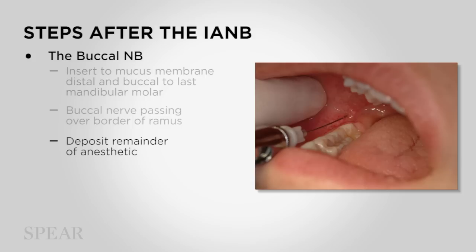Unfortunately, this injection is more painful than the inferior alveolar. The VAS — visual analog scale — rates pain from 0 to 10, with 0 being you felt absolutely nothing and 10 being the worst pain imaginable. This injection rates around 3; anything from 3 or lower is comfortable, anything above 3 is increasingly more painful. The problem is the moment your needle enters the soft tissue, you're on periosteum, and periosteum is very sensitive.